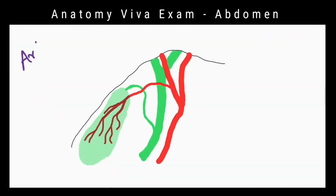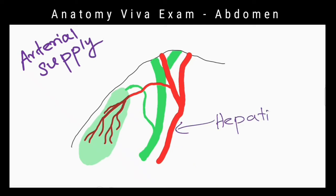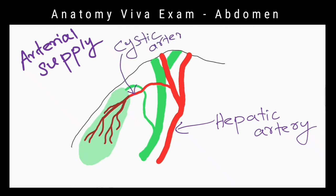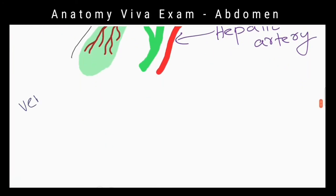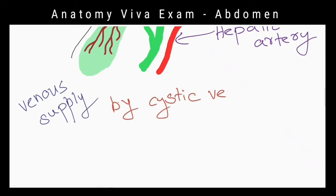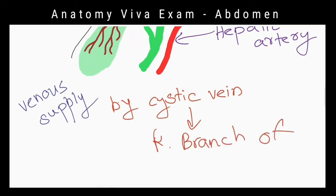Tell me about the blood supply of the gallbladder. The cystic artery, which usually arises from the right hepatic artery, is the main source of arterial supply to the gallbladder. It is also supplied by arteries from the gallbladder bed. The gallbladder is drained by cystic veins which open into the right branch of the portal vein, and a small part is drained by veins joining tributaries of the hepatic vein.